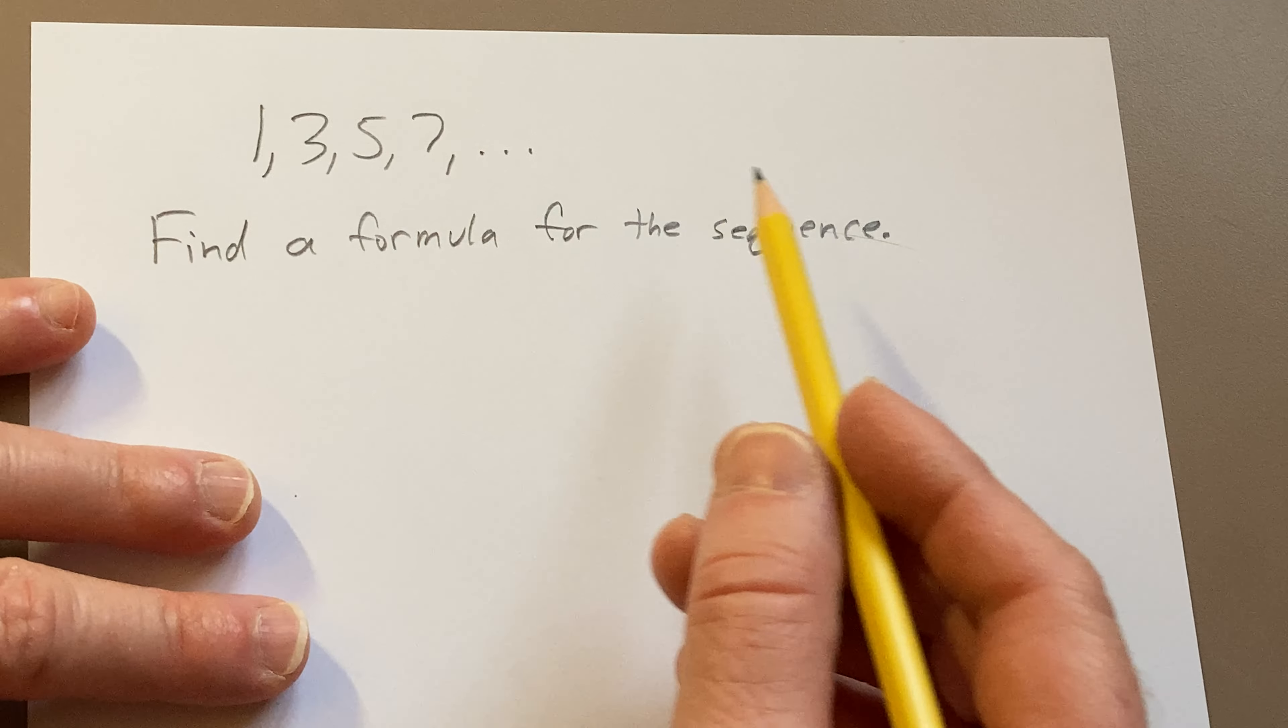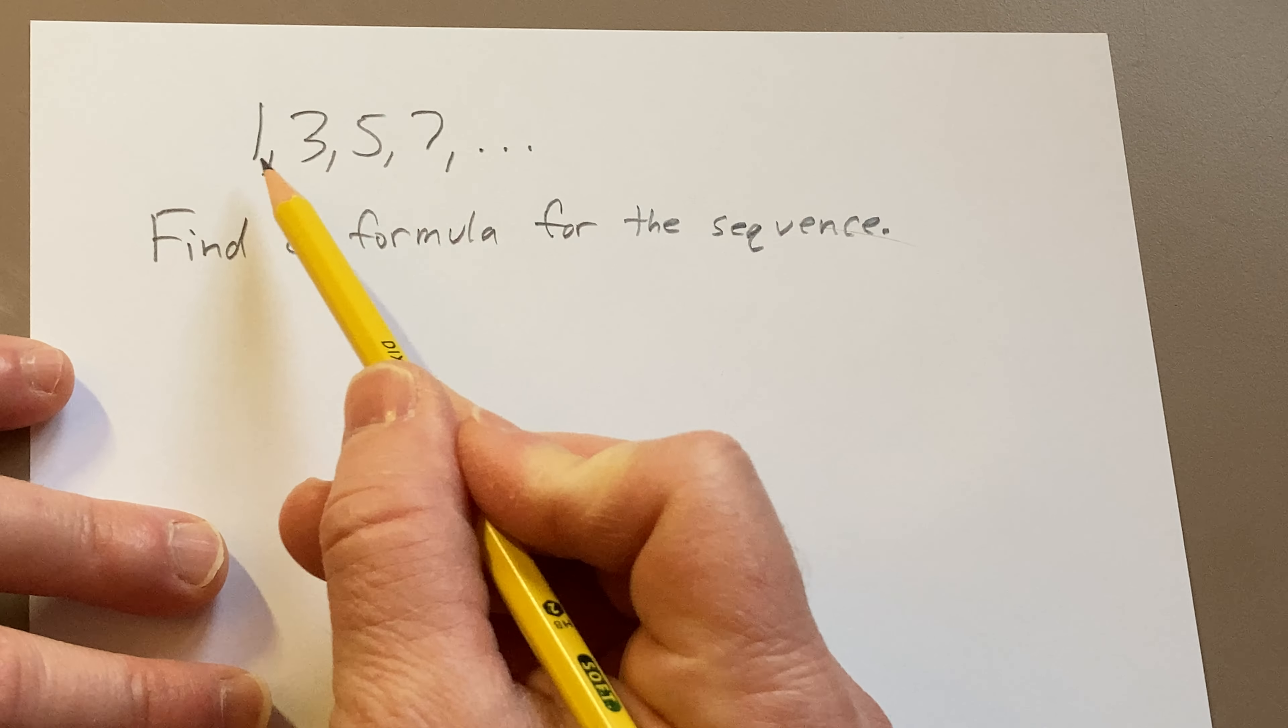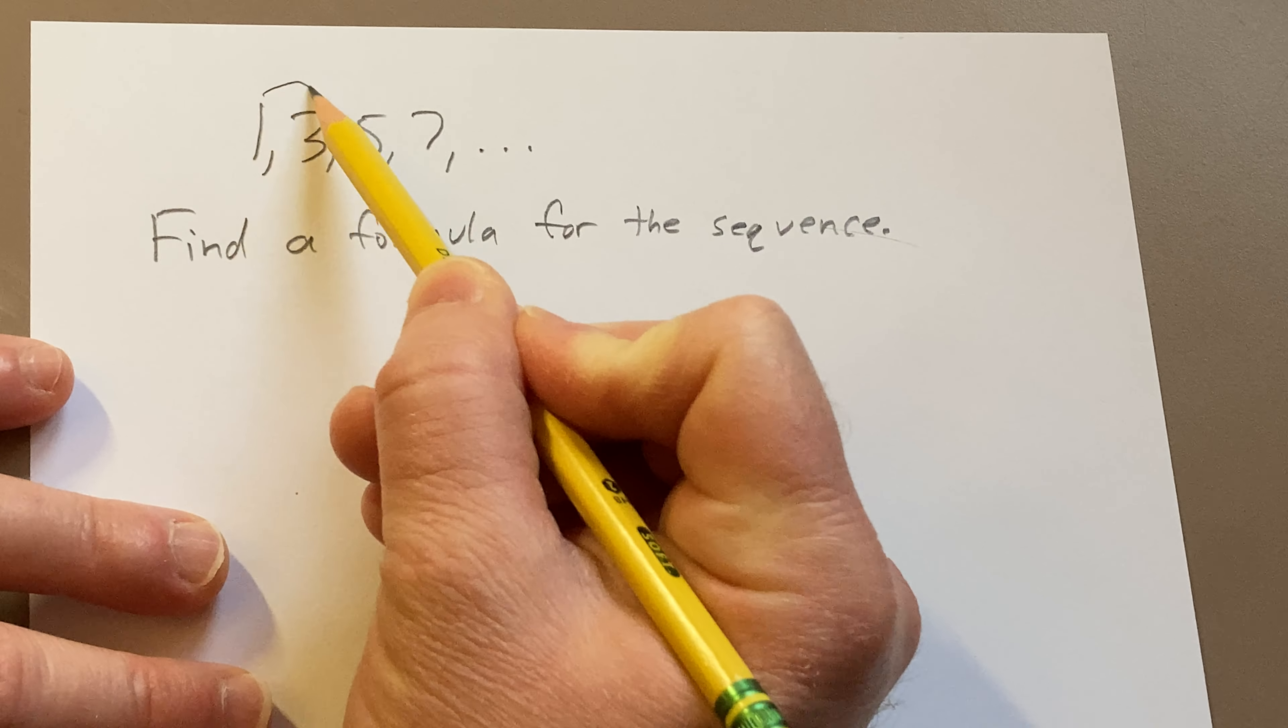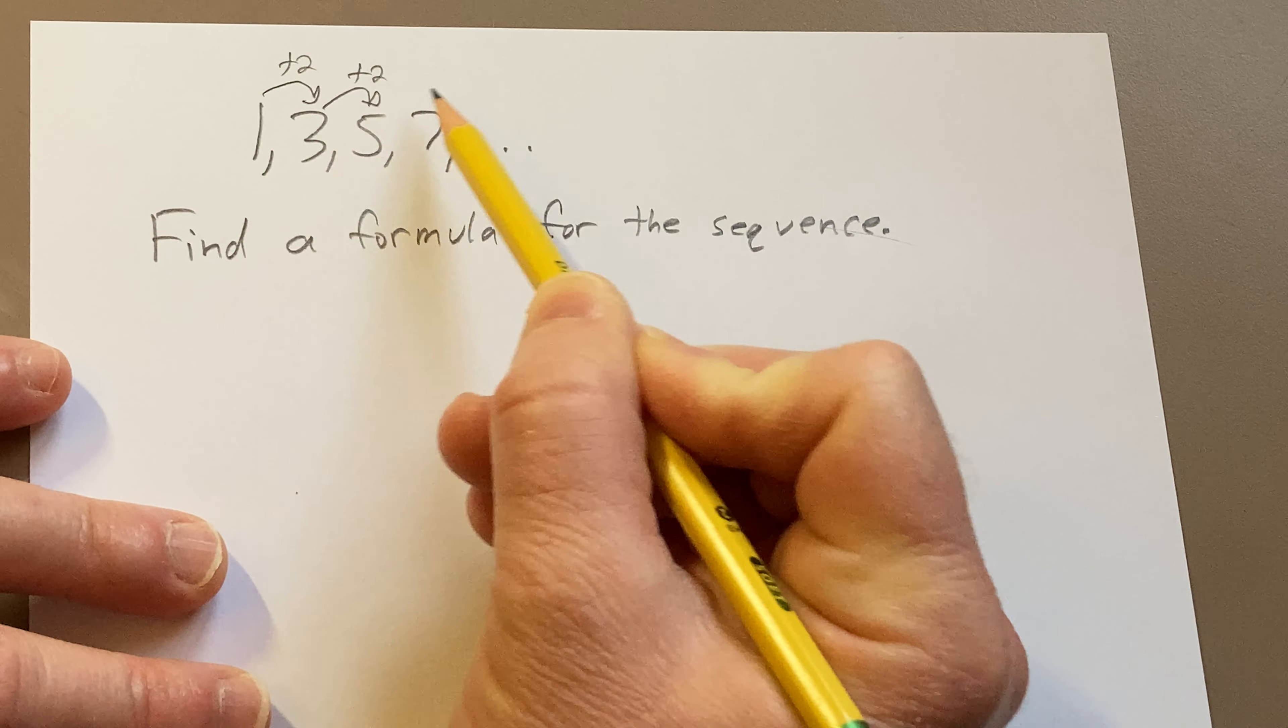So to find a formula for the sequence, we're going to make an observation. Notice that we're basically adding 2 each time. So we're just doing plus 2, plus 2, plus 2.